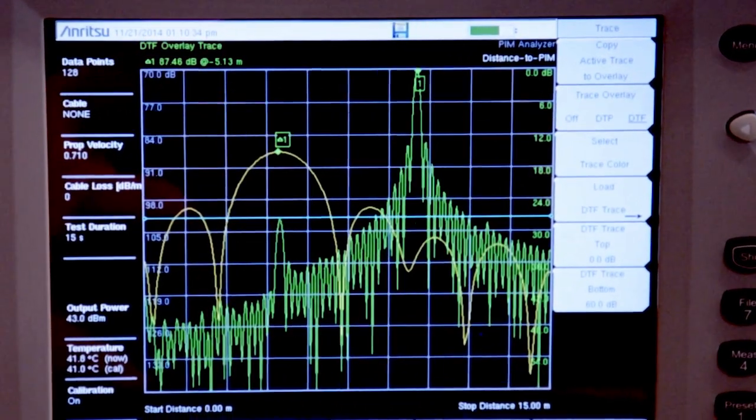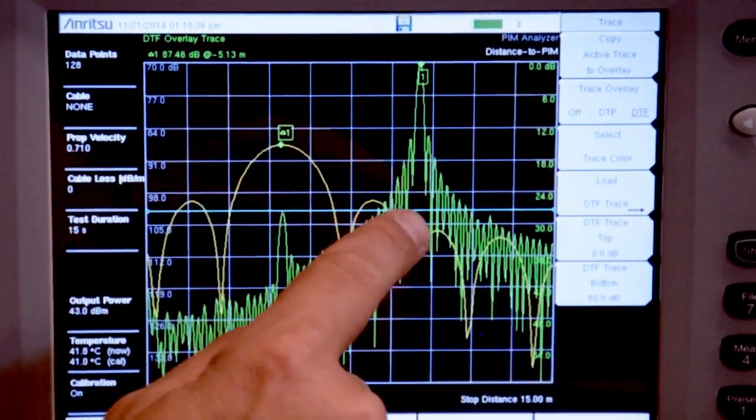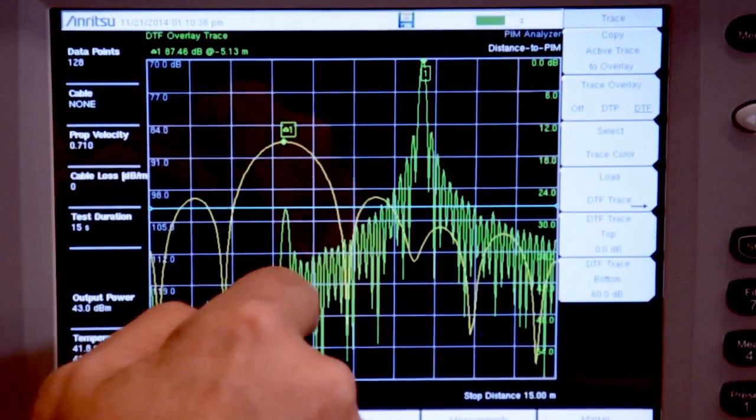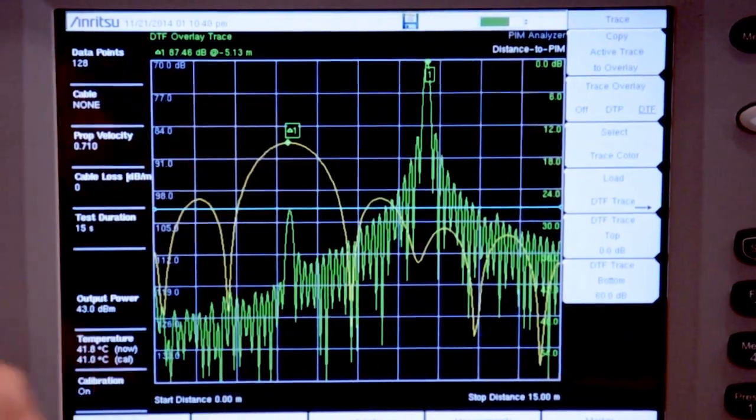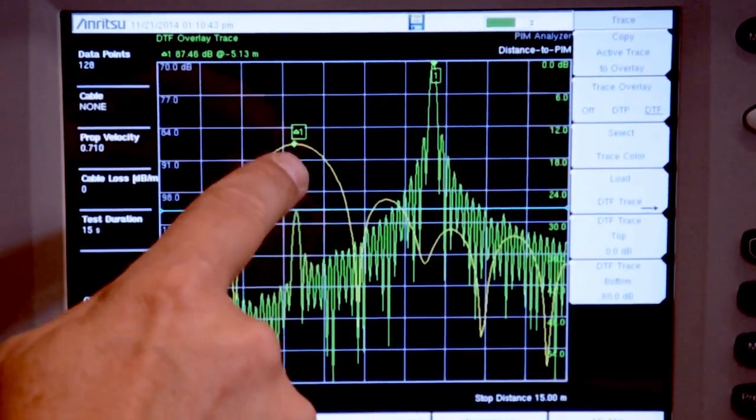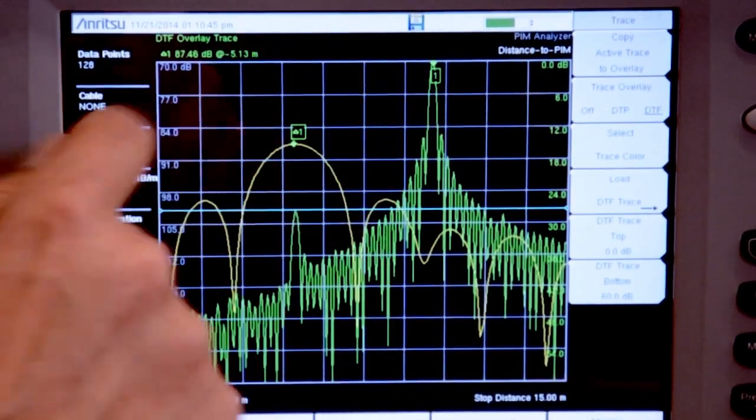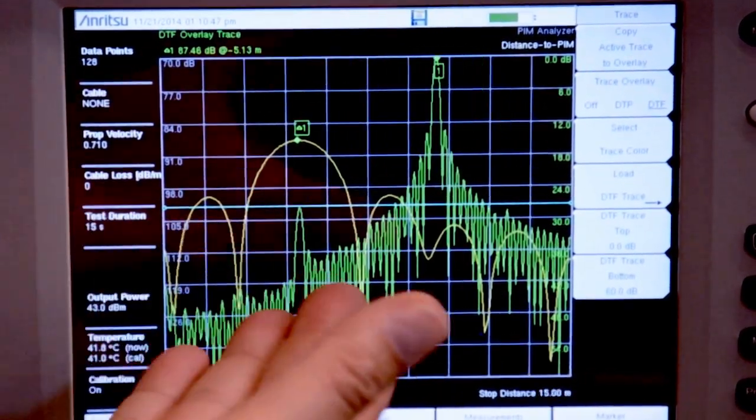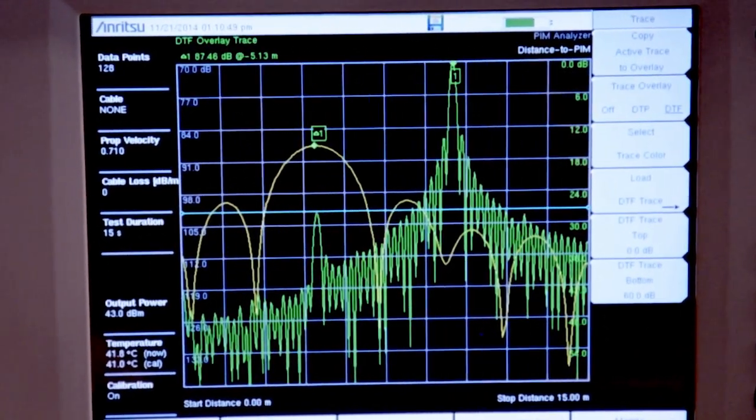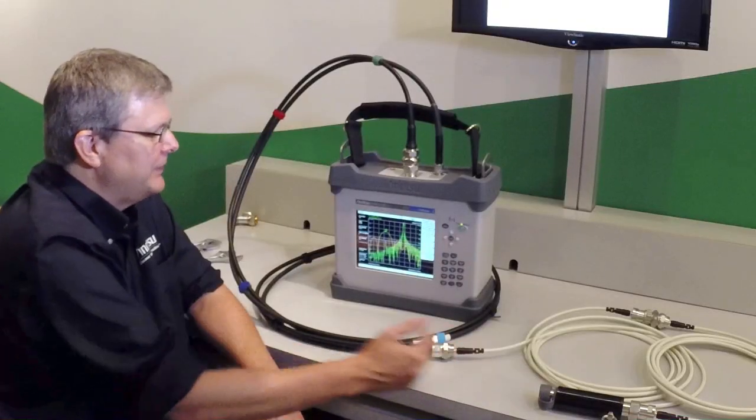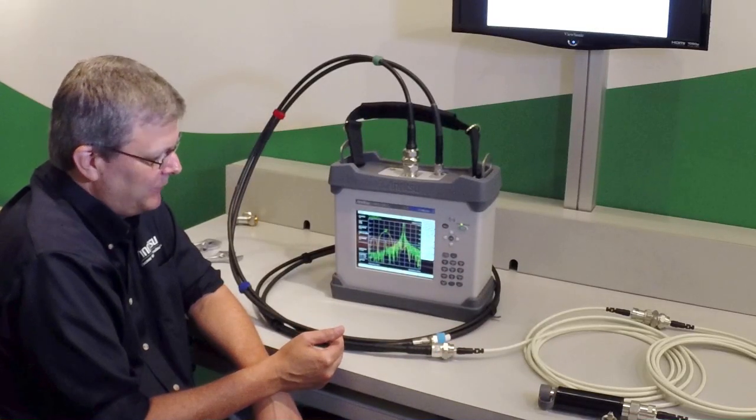What this tells me is that if I look at the location of where we know the end of the cable was and look at the location of our PIM fault, a delta marker has been set up and it tells us that it's minus 5.13 meters. So more information about the location of this PIM - we know that it's five meters closer to the instrument than the end of the cable.